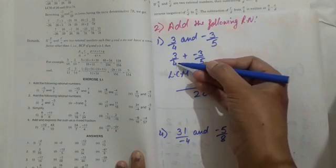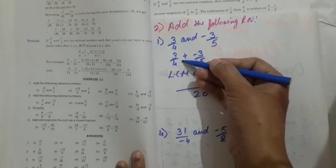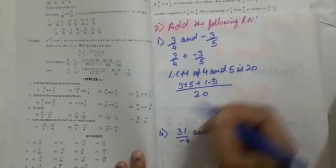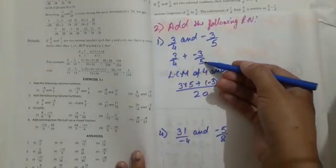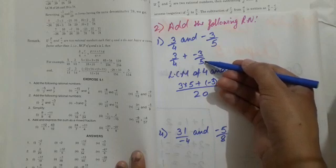Same procedure: take a line and take in denominator 20. How can you bring it here? To bring 20, you will multiply 4 with 5, it means 3 will also multiply with 5. Plus -3, multiply 5 with 4.